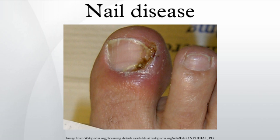Subungual hematoma occurs when trauma to the nail results in a collection of blood under the nail. It may result from an acute injury or from repeated minor trauma such as running in undersized shoes. Acute subungual hematomas are quite painful and are usually treated by releasing the blood by creating a small hole in the nail; drilling and thermal cautery are common methods. Thermal cautery is not used on acrylic nails because they are flammable.